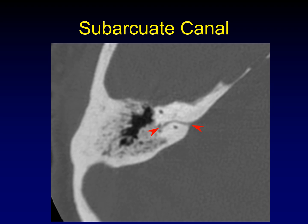It's called subarcuate because it goes underneath the arch of the superior semicircular canal. Here is the anterior limb and here is the posterior limb of the superior semicircular canal. We're way up high in the petrous apex, and here is the subarcuate canal. It carries the subarcuate artery, which is going to supply the middle ear cavity.